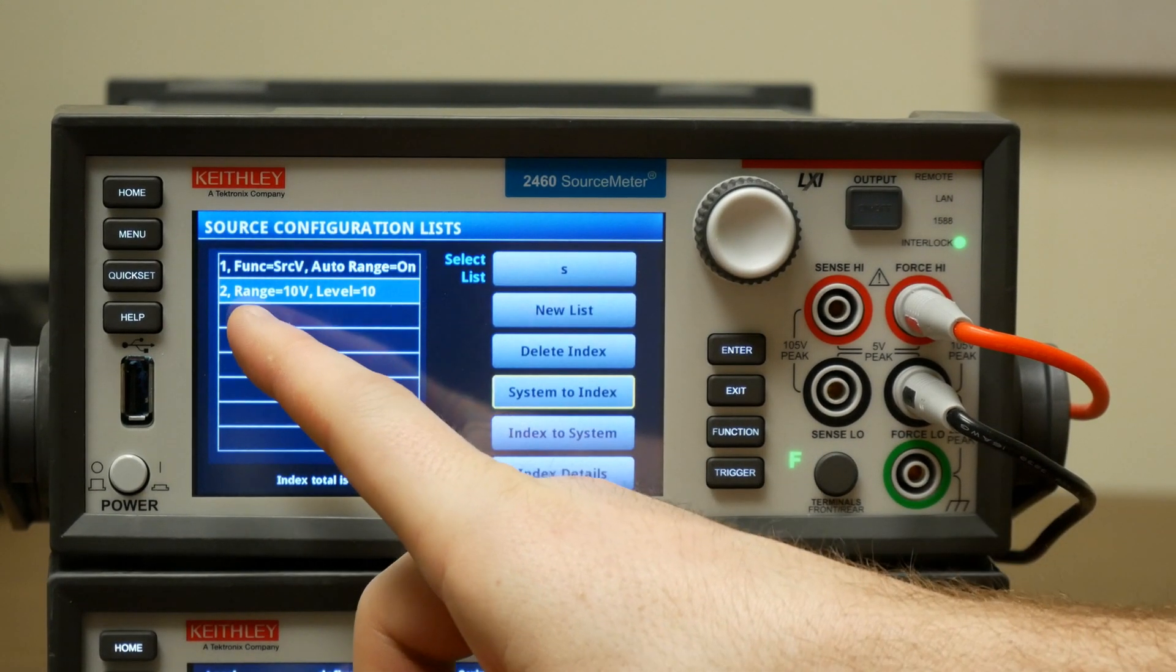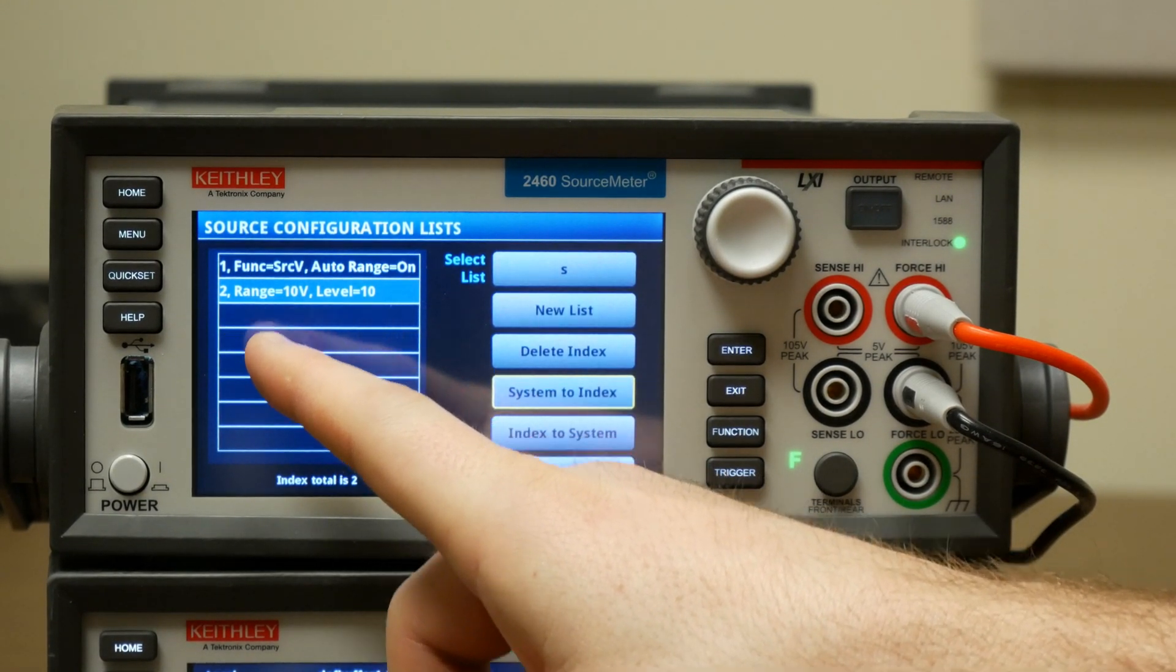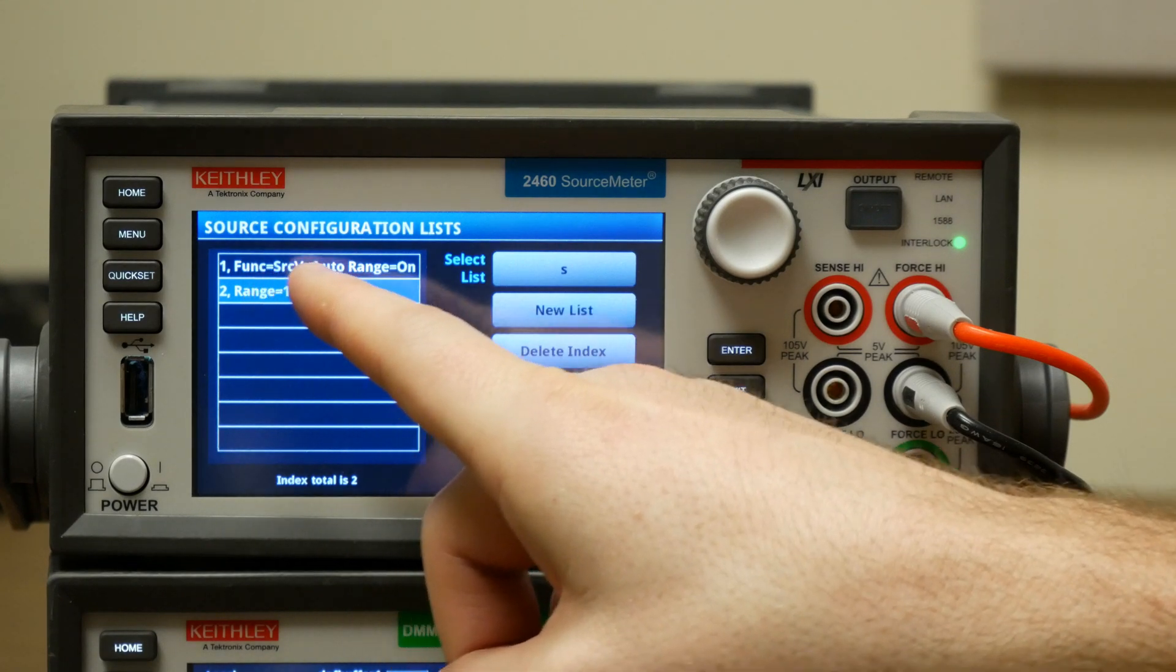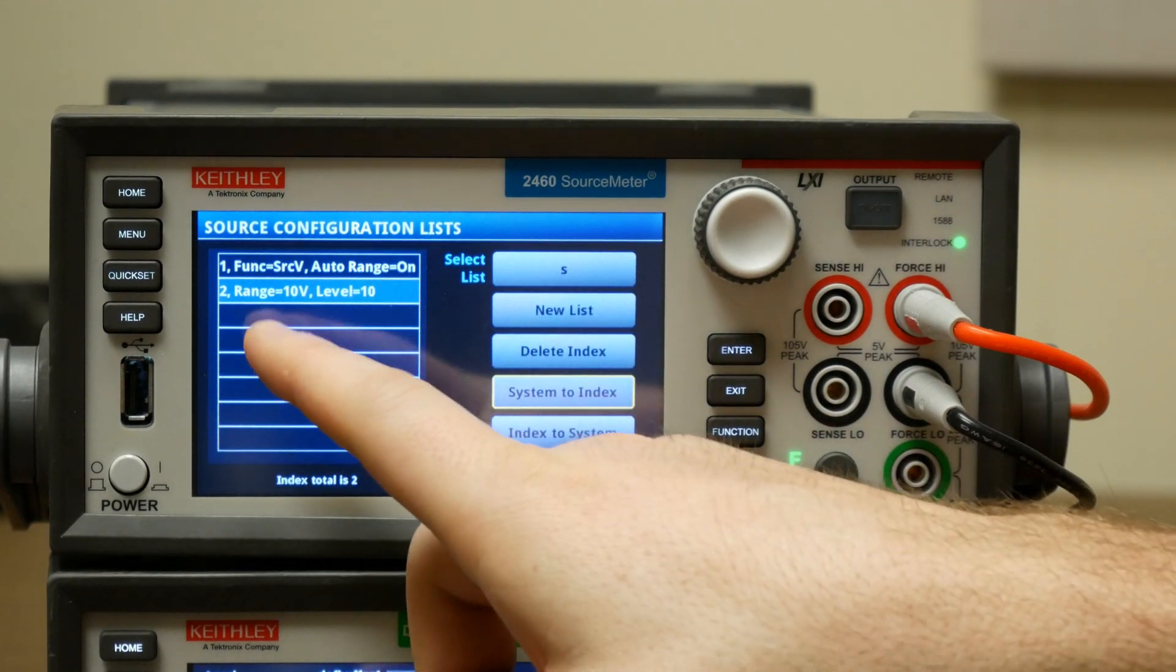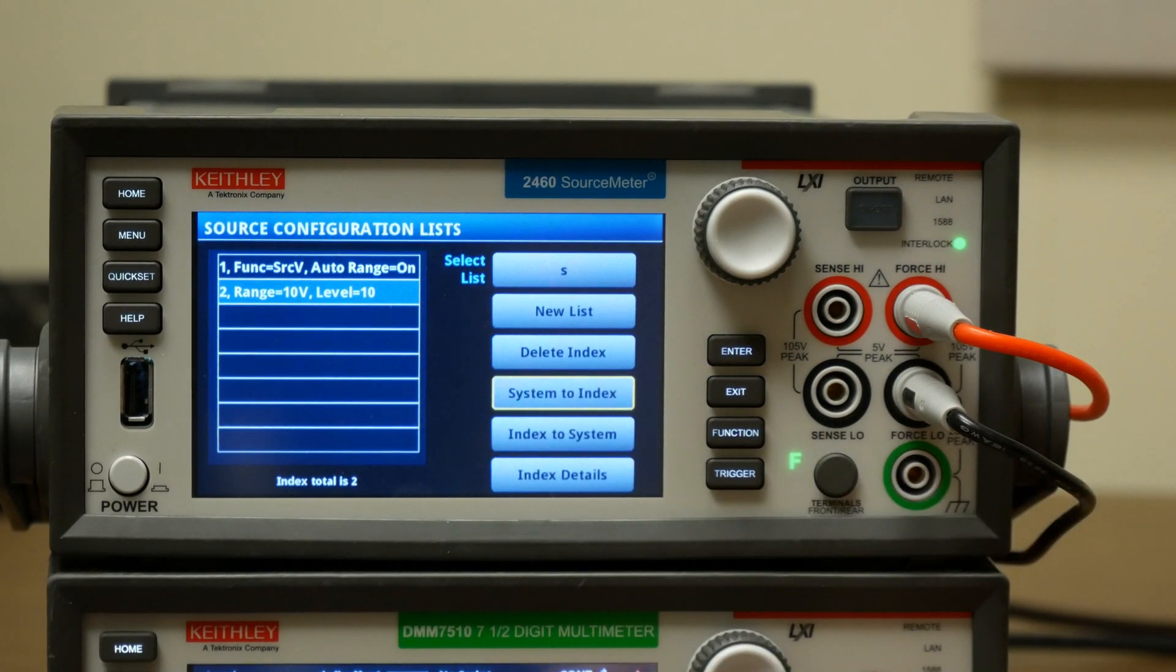And now it'll show us what has changed from index 1 to index 2. So we're still, for example, sourcing voltage up here, but we've changed to a range of 10 volts and a level of 10 volts.